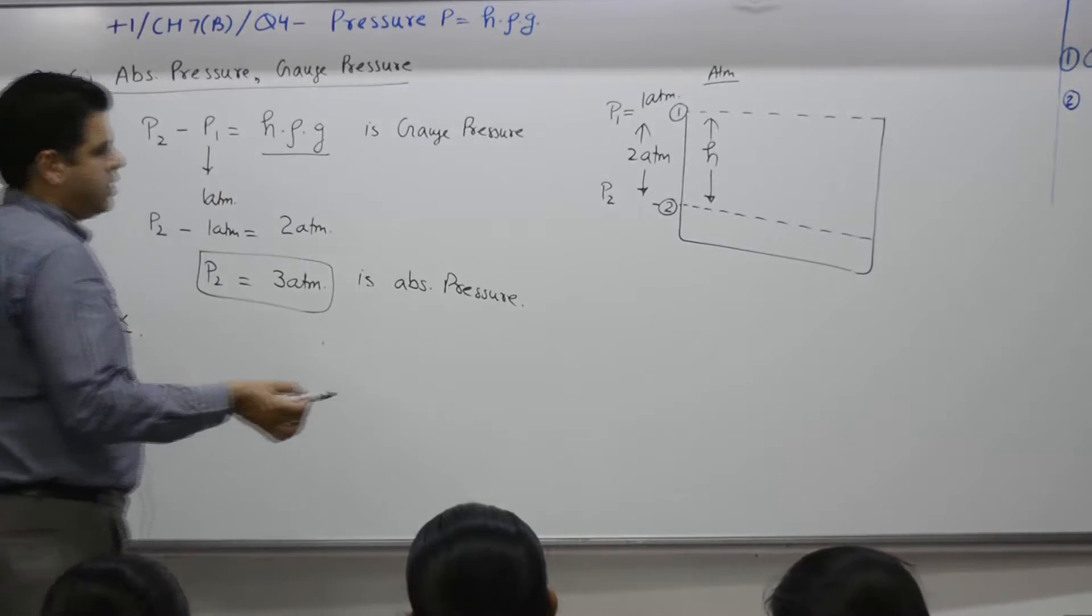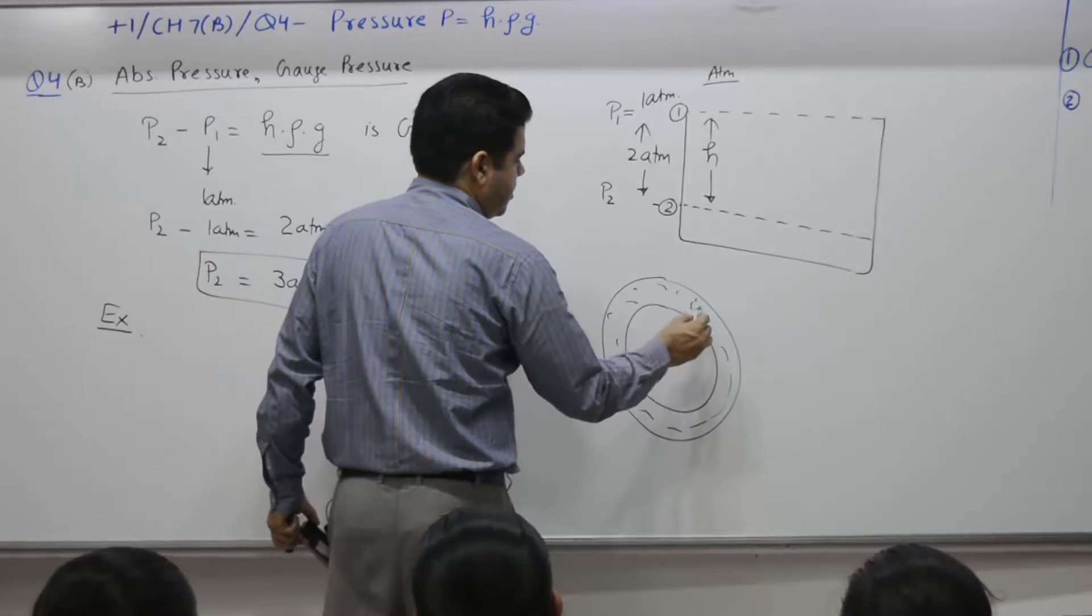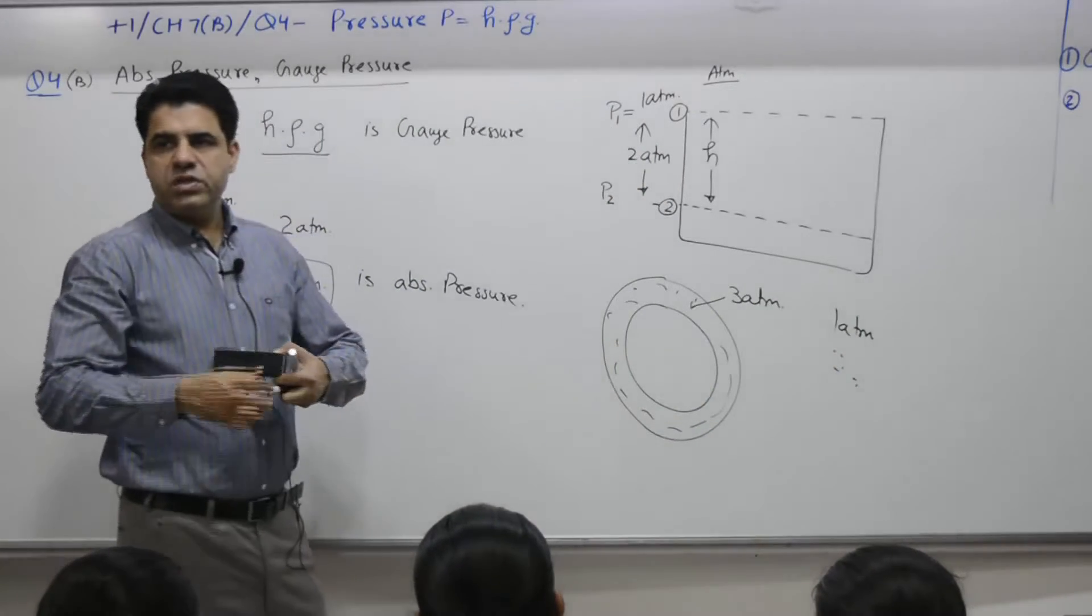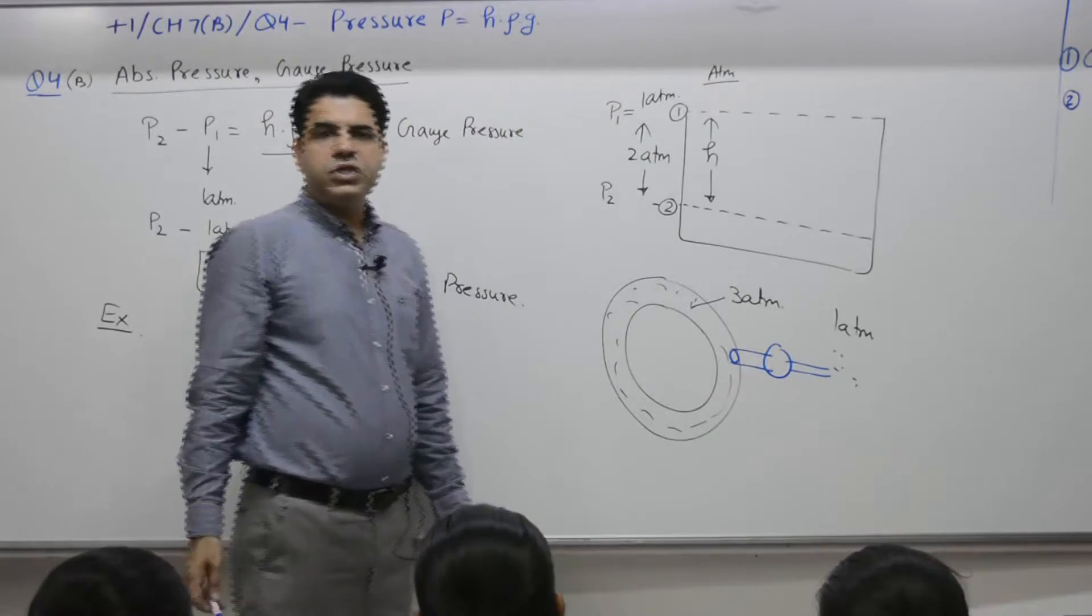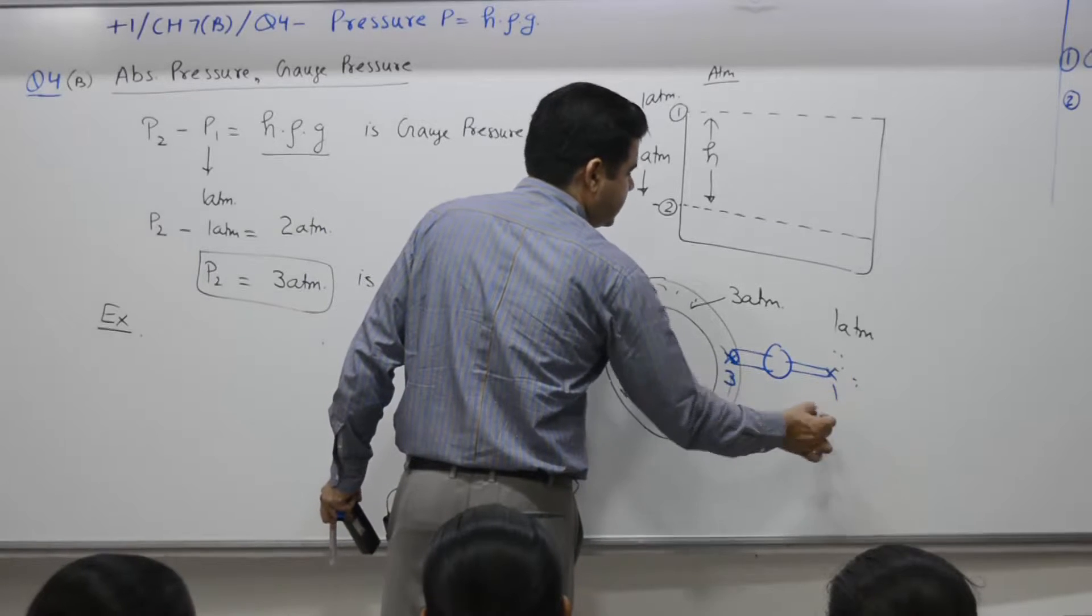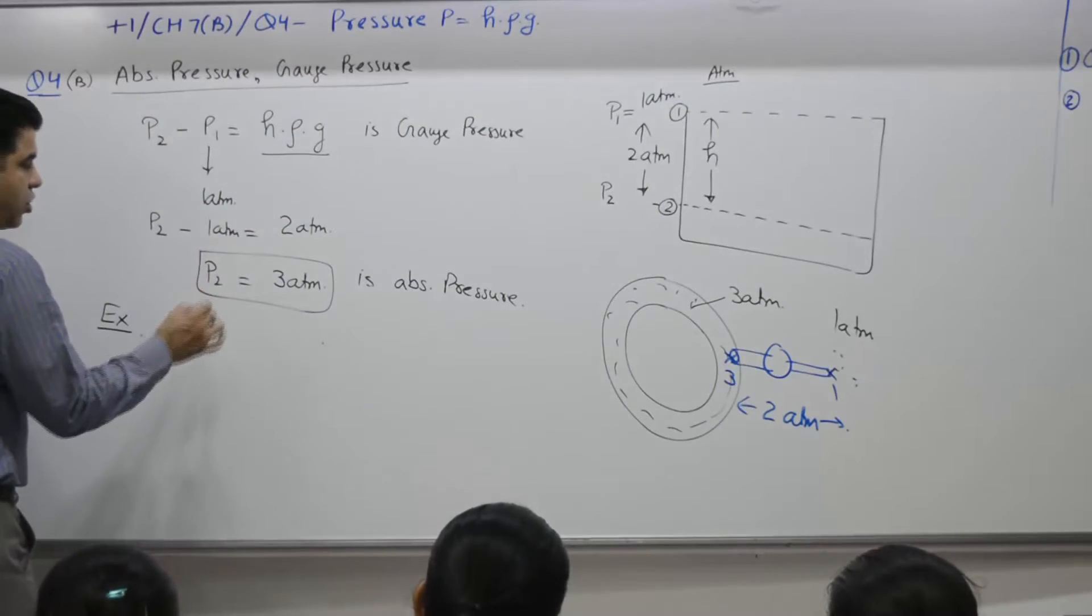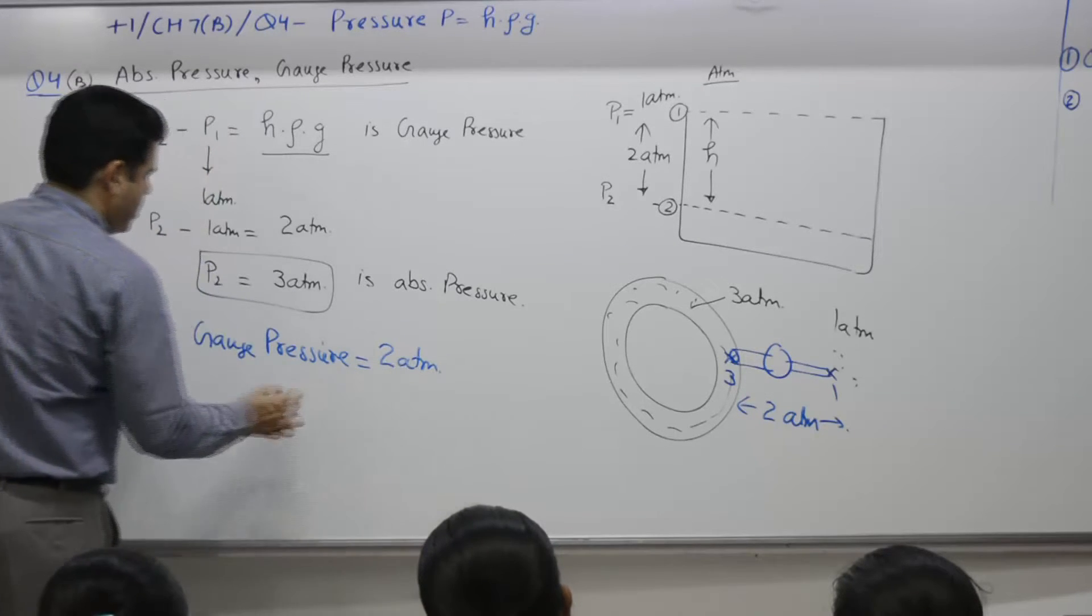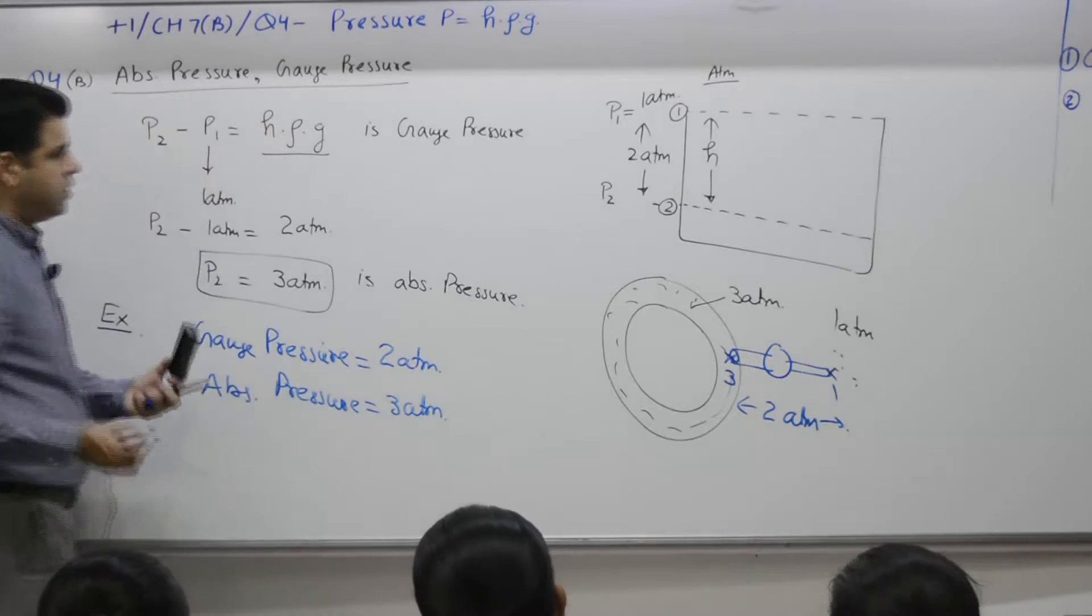One more example, tyre. Inside the tyre pressure is 3 atmosphere, outside is 1 atmosphere. If you use one instrument that is termed as pressure gauge, it is a device which measures pressure. All of you have used it. It gives you the pressure difference because on one side pressure is how much? 3 atmosphere. On the other side it is 1. It gives you what reading? 2 atmosphere. So in this case, gauge pressure is how much? Gauge pressure for the tyre is 2 atmosphere. Absolute pressure inside the tyre is how much? 3 atmosphere. Time with you is 4 minutes to write.